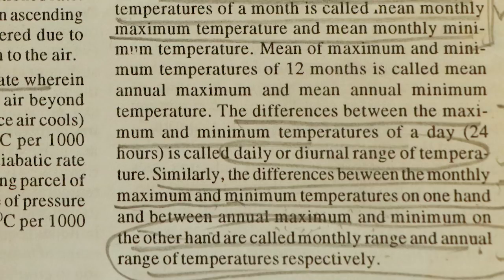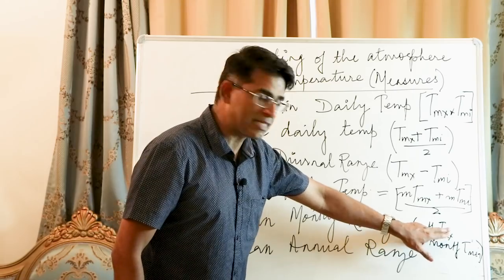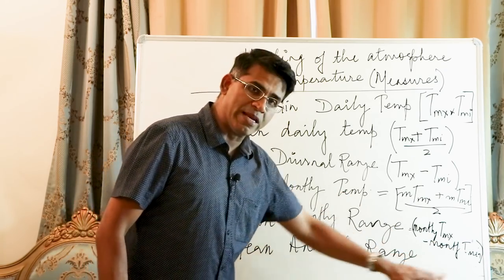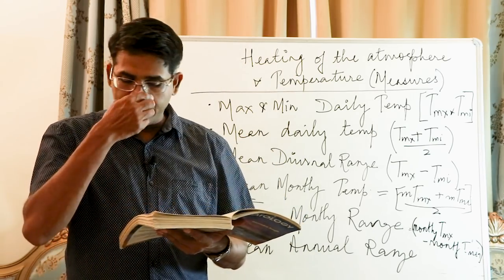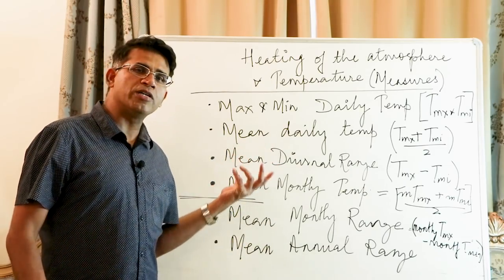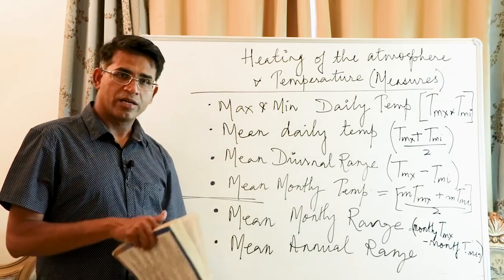The difference between maximum and minimum temperatures of a day is called the daily or diurnal range of temperature. Similarly, the difference between monthly maximum and monthly minimum temperatures is the monthly range, and the difference between annual maximum and annual minimum temperatures is the annual range.